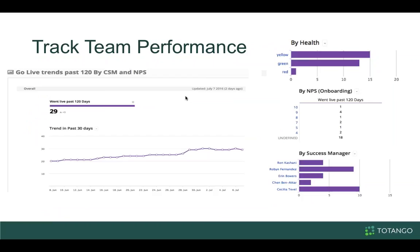Another report example is tracking team performance: looking at all customers that went live in the past 120 days and breaking it down by NPS score, health, and success manager. You can see how many customers are going live at any given point, how satisfied they are by NPS, how they're doing in health — all visualization processes you can leverage after you have the data segmented.